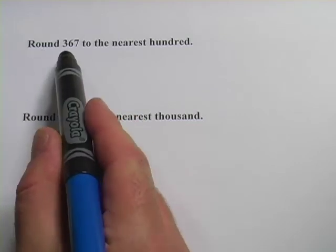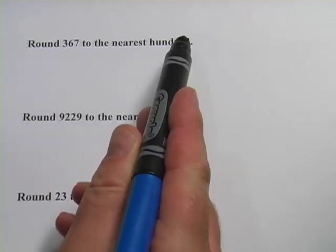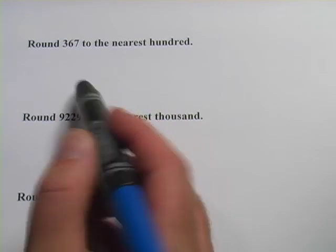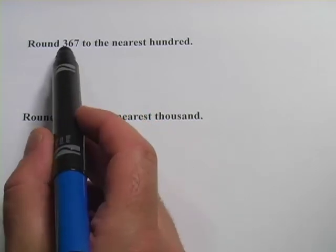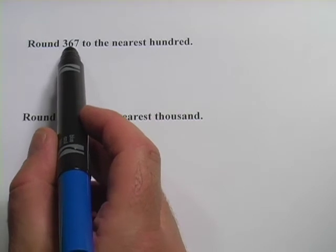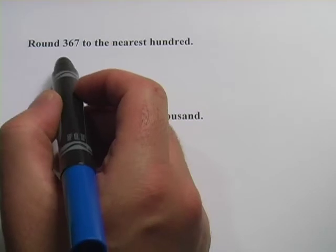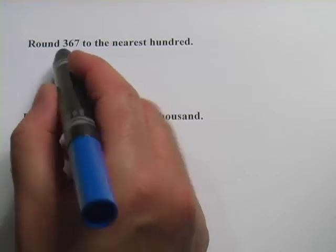When they say round 367 to the nearest hundred, we're going to end up with just a plain old hundred, like a 300, a 400. And because the number here is three, you know it's either going to round down to 300, or you're going to round up to 400. In this case we're going to round up.